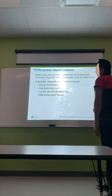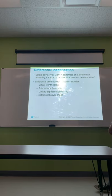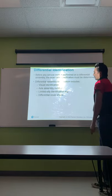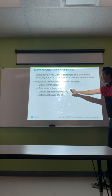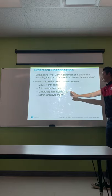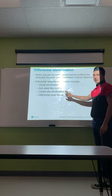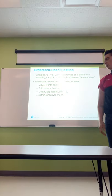Differential identification: before any service work is performed on a differential assembly, the exact axle specification must be determined. Differential assembly identification includes visual identification, axle assembly number, a limited slip identification tag if it has limited slip, and the differential cover shape.